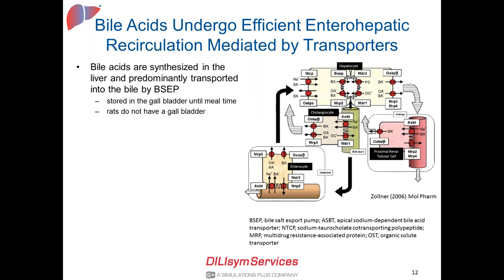Moving on to bile acid transport: bile acids undergo efficient enterohepatic recirculation mediated by multiple transporters and multiple organs. This recirculation is very efficient — more than 95% of the entire bile acid pool is recirculated through enterohepatic recirculation, and less than 5–10% of the entire pool comes from new synthesis.